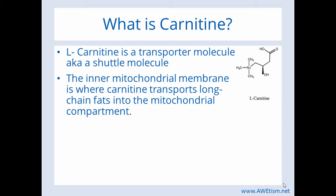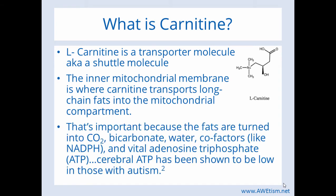The inner mitochondrial membrane is where carnitine transports long-chain fats into the mitochondrial compartment. This is important because fats are turned into carbon dioxide, bicarbonate, water, and various cofactors such as NADPH, which is hugely important in our body, and the absolutely vital adenosine triphosphate — ATP. Cerebral ATP has been shown to be low in those with autism. ATP is basically cellular energy — it's how our body uses energy. And carnitine is the shuttle molecule that brings the fats into the mitochondrial compartment, so carnitine is very important in this process.